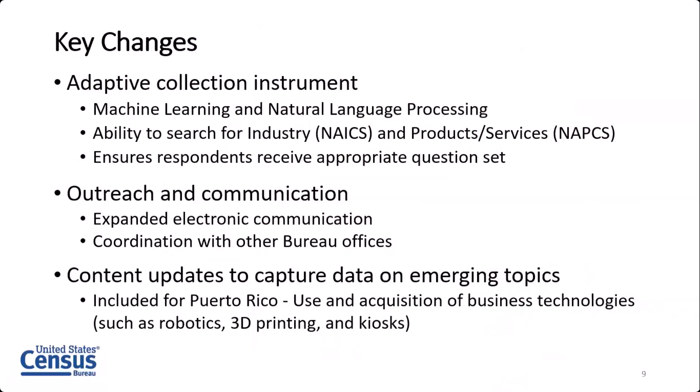What's new for 2022? We have a new adaptive collection instrument that includes machine learning and natural language processing. This allows businesses to put in search terms to highlight their specific industry or the products and services they provide. When we mail out the Economic Census, we have information on what industry the businesses are in, but that's not always correct or businesses change what they do. So this instrument allows them to search on their own, tailoring the questionnaire to their specific industry and products. We also have an expanded outreach and communication plan, and new content to capture data on emerging topics — including for Puerto Rico, the use of business technologies such as robotics and self-checkout kiosks.